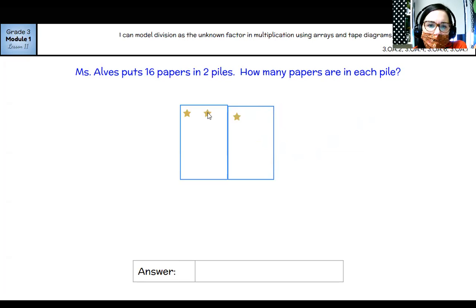One, two, three, four, five, six, seven, eight, nine, 10, 11, 12, 13, 14, 15, 16. So let's make sure these each have the same amount. Two, four, six, eight, two, four, six, eight. Yes, they do. That means we did something right.